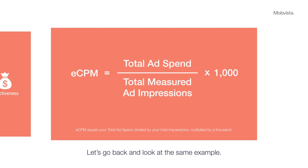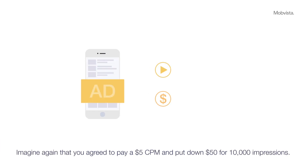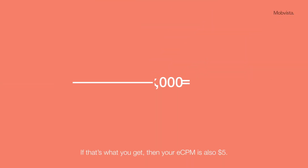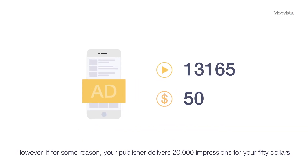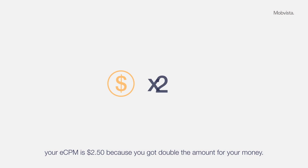Let's go back and look at the same example. Imagine again that you agreed to pay a five dollar CPM and put down fifty dollars for ten thousand impressions. If that's what you get, then your eCPM is also five dollars. However, if your publisher delivers twenty thousand impressions for your fifty dollars, your eCPM is two dollars and fifty cents, because you got double the amount for your money.